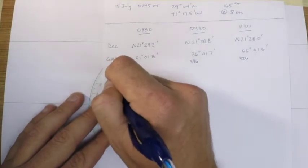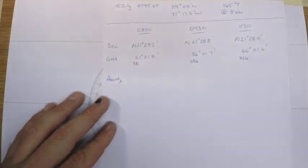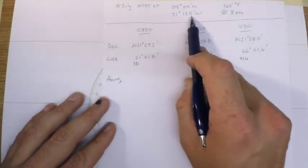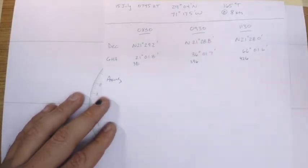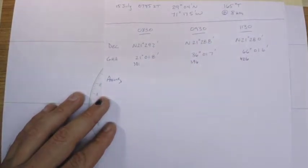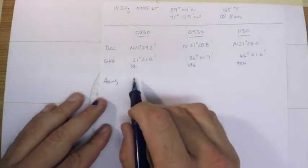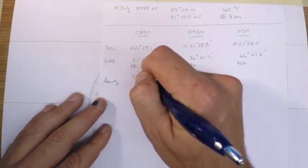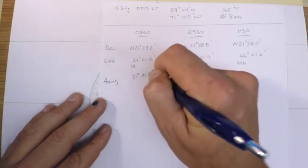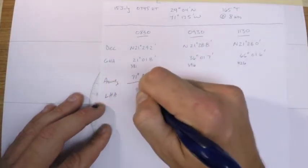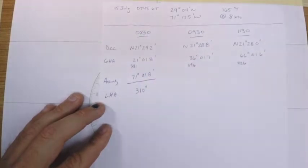So the next step would be to assume a longitude. In this case our DR longitude was about 71 degrees west, so I'd like to stay somewhere around there. When I do this subtraction I would like my LHA to come out to a whole value. When I choose a longitude I'm gonna say 71 degrees 01.8 for this one, and if I do that subtraction I end up with an LHA of 310 degrees. Likewise for the 0930 sight I'm gonna choose a longitude of 71 degrees 01.7 and I'll subtract GHA minus longitude to get an LHA of 325 degrees.